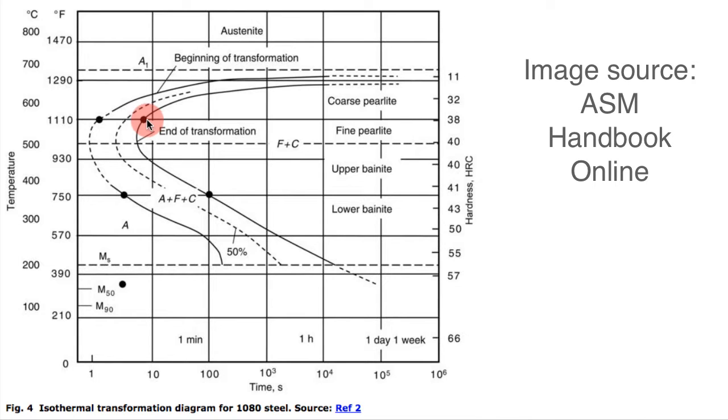the transformation from austenite to what's labeled here as coarse perlite is complete, theoretically or empirically—that's how this diagram is created. Actually, let's talk about how this diagram is created.